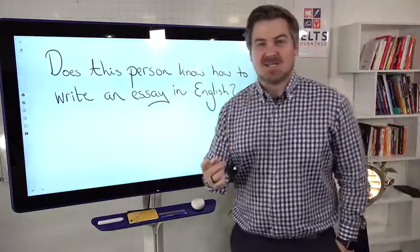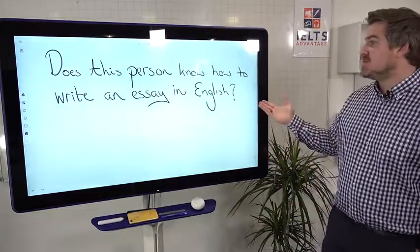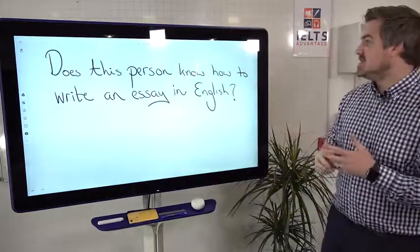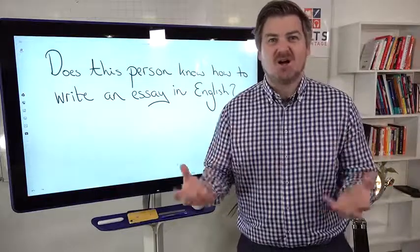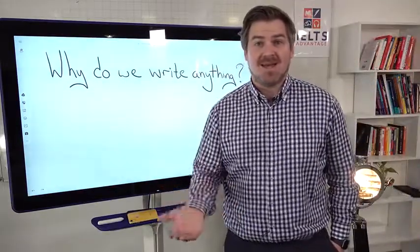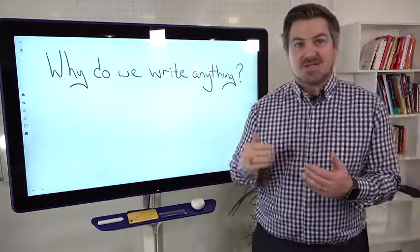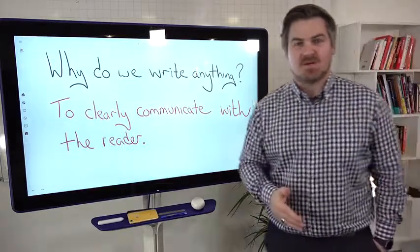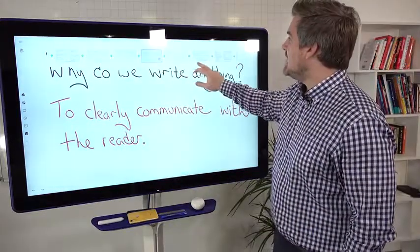Forget about all of these things that don't really matter and focus on the one thing that does matter. The one question that the examiner is really asking themselves when they're looking at your writing is: does this person know how to write an essay in English? When you are writing, this is what you should be thinking about. We need to ask the purpose of writing an essay or the purpose of writing anything. Why do we write anything? Most of you who are struggling for years to get the score that you need never ask yourself that question. Why do we write anything? To clearly communicate with the reader. What's the one thing you can do to improve your scores? Clearly communicate with the reader.